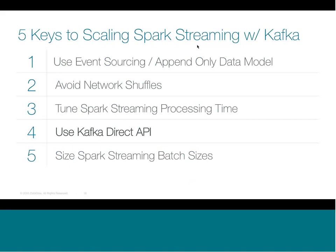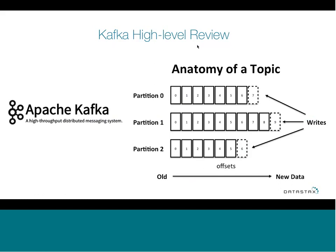The next key is to use the Kafka Direct API. As a quick review: in Kafka, you create topics — the queue your data gets written into — and those topics can be divided into partitions, which is a way of allowing Kafka to scale. What it does is maintain an offset — the position number in that message queue. Offset 0, 1, 2, 3 — that offset is used by the reader to tell which messages have been read, keeping track of where you've read out of that Kafka topic.